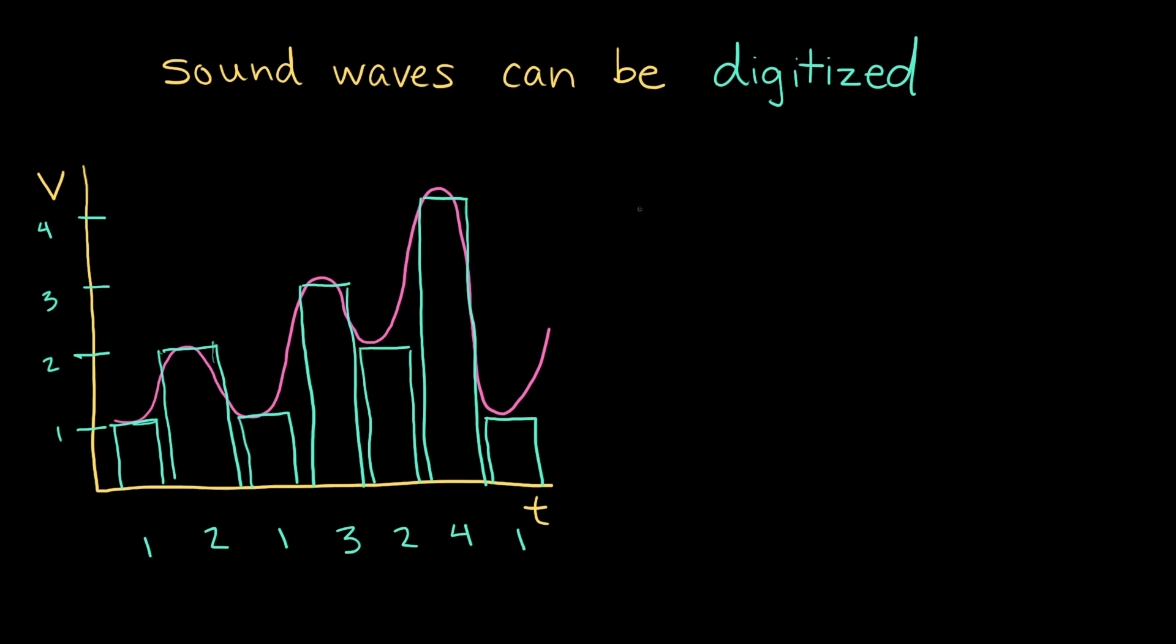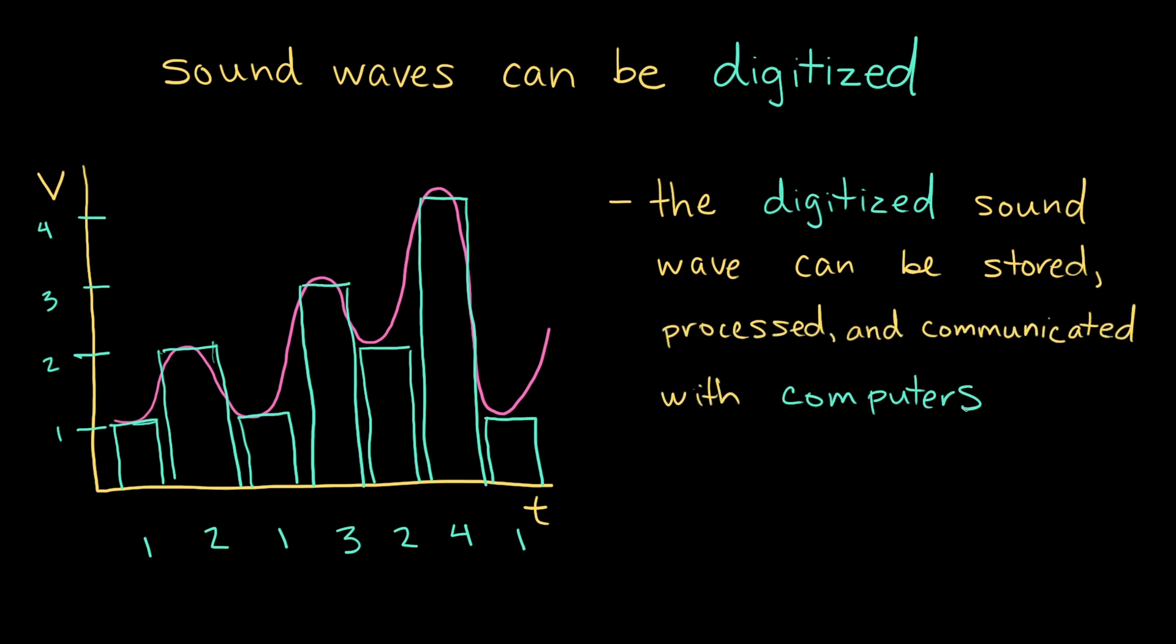The important thing here is that now that the wave has been digitized, the digitized sound wave can be reliably stored, processed, and communicated with computers. So some information is lost in translation, but once the wave is digitized, its quality will never degrade. And that allows for a lot more reliable technology because the wave is represented with numbers instead of it being physically imprinted on some material.